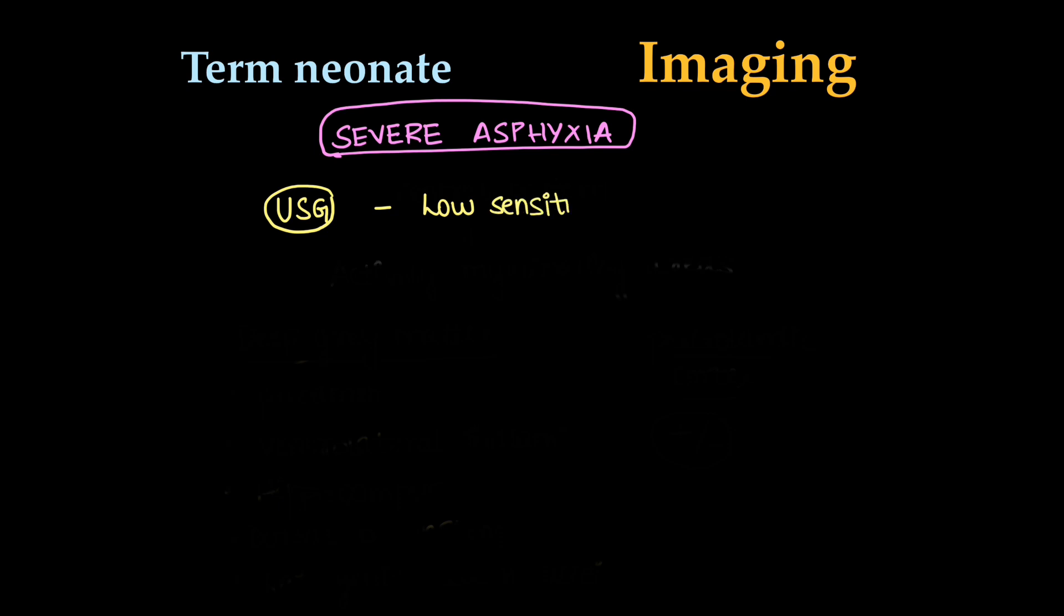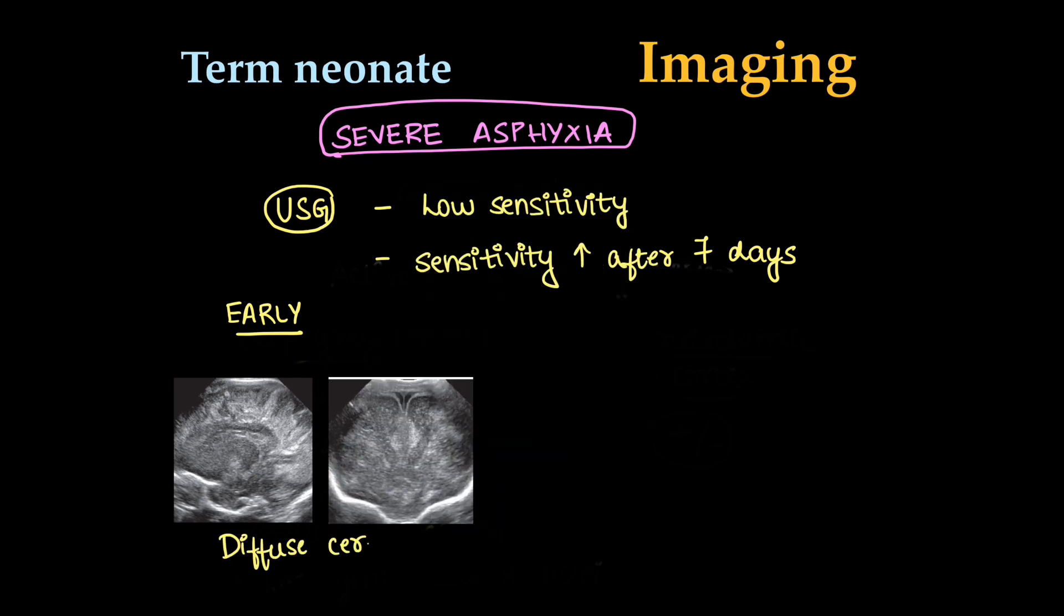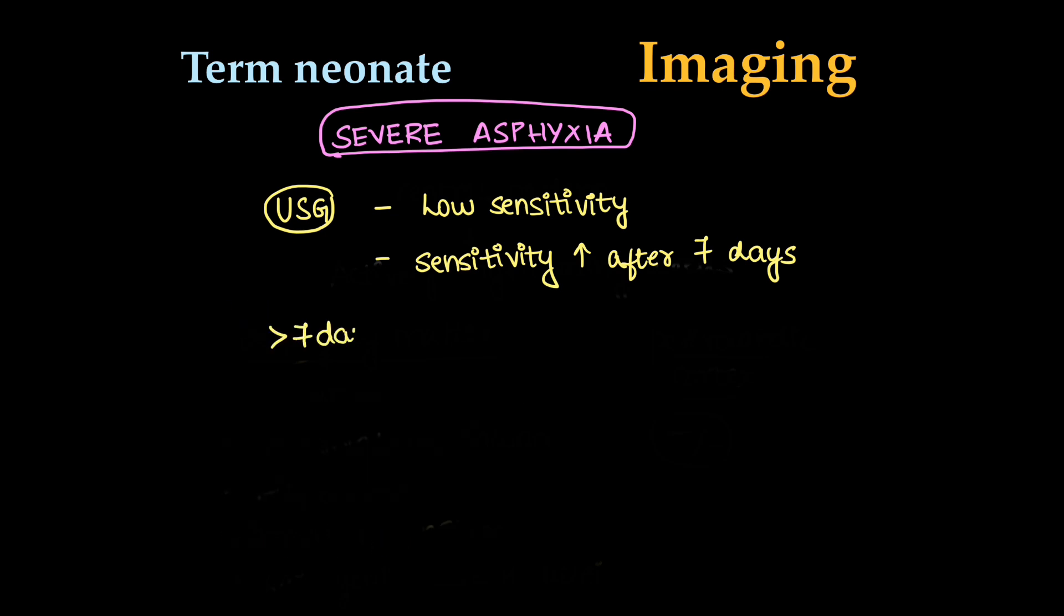What are the imaging modalities and findings? First, ultrasound, which has low sensitivity, but it is increased after 7 days. Early findings include diffuse cerebral edema with ventricles appearing collapsed or obliterated, obliteration of extra-axial CSF spaces, gyral edema, and global increase in echogenicity. This is sagittal and coronal sections on ultrasound in anterior fontanelle.